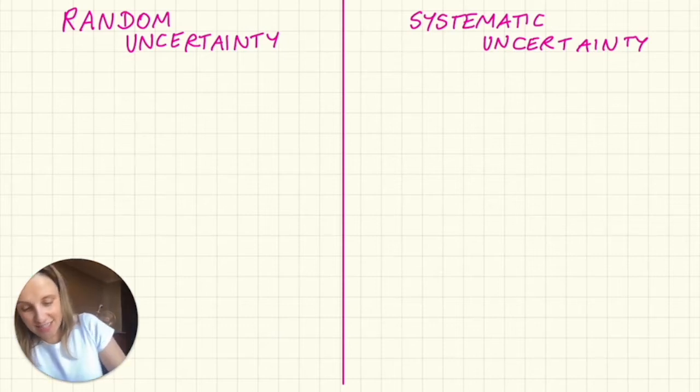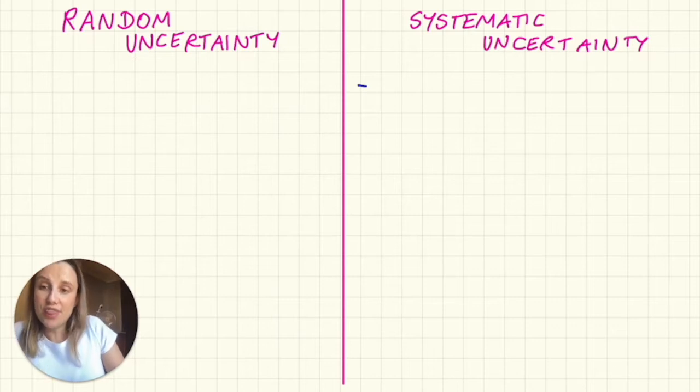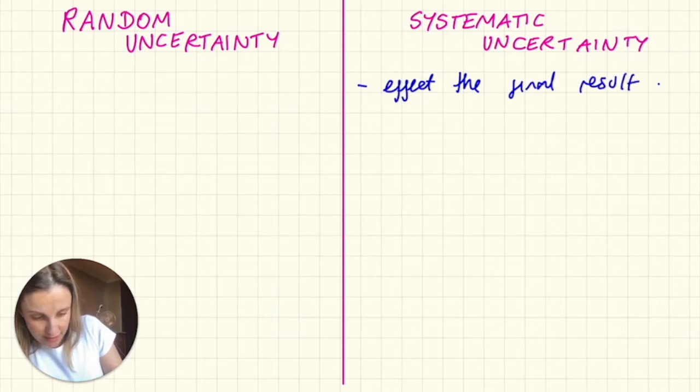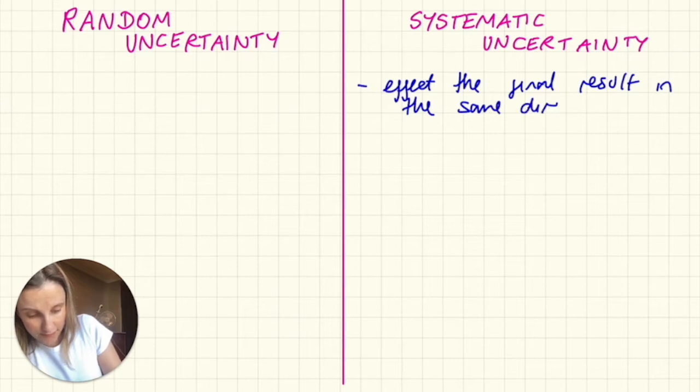So systematic uncertainties on this side, the right-hand side, are things that affect the final result in the same direction every time.